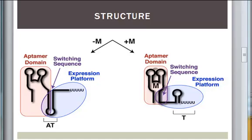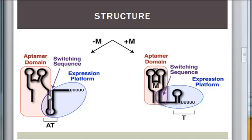This structure here represents the aptamer with and without ligands. This pink shaded box is the aptamer domain and the blue is the expression platform domain. The Shine-Dalgarno sequence would most likely be found here — this sequence is here, and the one here.